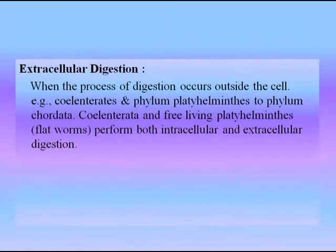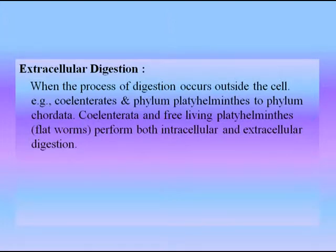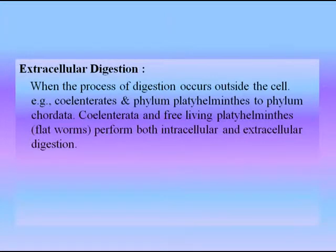The second type is extracellular digestion, which is when the process of digestion occurs outside the cell. Examples include cnidarians and phylum platyhelminthes, and phylum chordata. Cnidarians and free-living platyhelminthes perform both intracellular and extracellular digestion. Extracellular digestion occurs in the lumen — the opening — of the digestive system, with nutrient molecules being transferred to the blood or body fluid. It occurs in chordates, annelids, and crustaceans. In human beings, both intracellular and extracellular digestion take place.